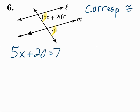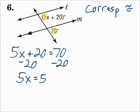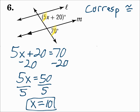5X plus 20 equals 70. Solve for X — subtract 20 from each side: 5X equals 50. Divide both sides by 5, and X is 10. That works because when corresponding angles are congruent, the lines are parallel — so make their measures equal each other.